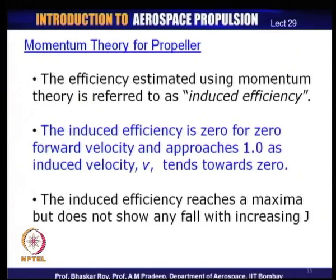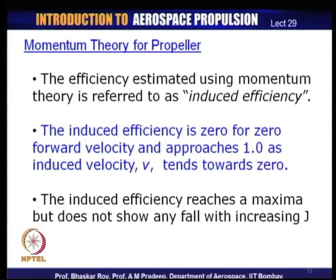If the induced velocity is 0, your thrust is going to be 0. So efficiency would be 1 when thrust is 0, and when thrust is maximum, efficiency is going to be 0. This is the anomaly of this particular theory, born out of the various models we put forward. As a result, we have to take these two points as singularities and not account for them with the help of this theory.